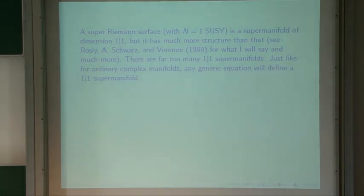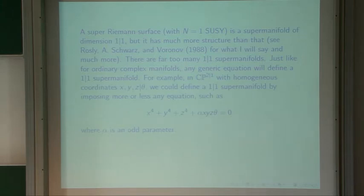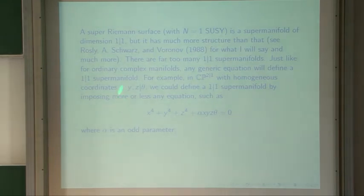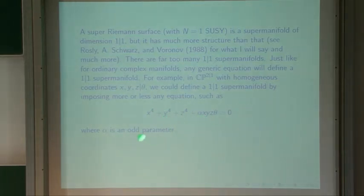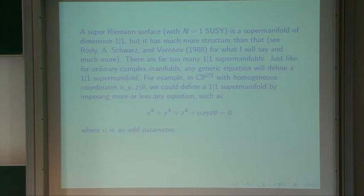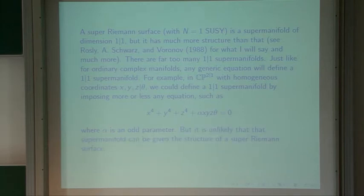Just like for ordinary complex manifolds, any generic equation will do. We start in CP^{2|1}: there are three bosonic homogeneous coordinates x, y, z and one fermionic coordinate theta. Projectivizing reduces the dimension by one, so CP^{2|1} has dimension 2|1, and any generic equation with an odd parameter alpha gets us down to dimension 1|1. This defines a complex manifold of dimension 1|1, but since no special precautions were taken, it presumably is not a super-Riemann surface — generically you're not going to get one.